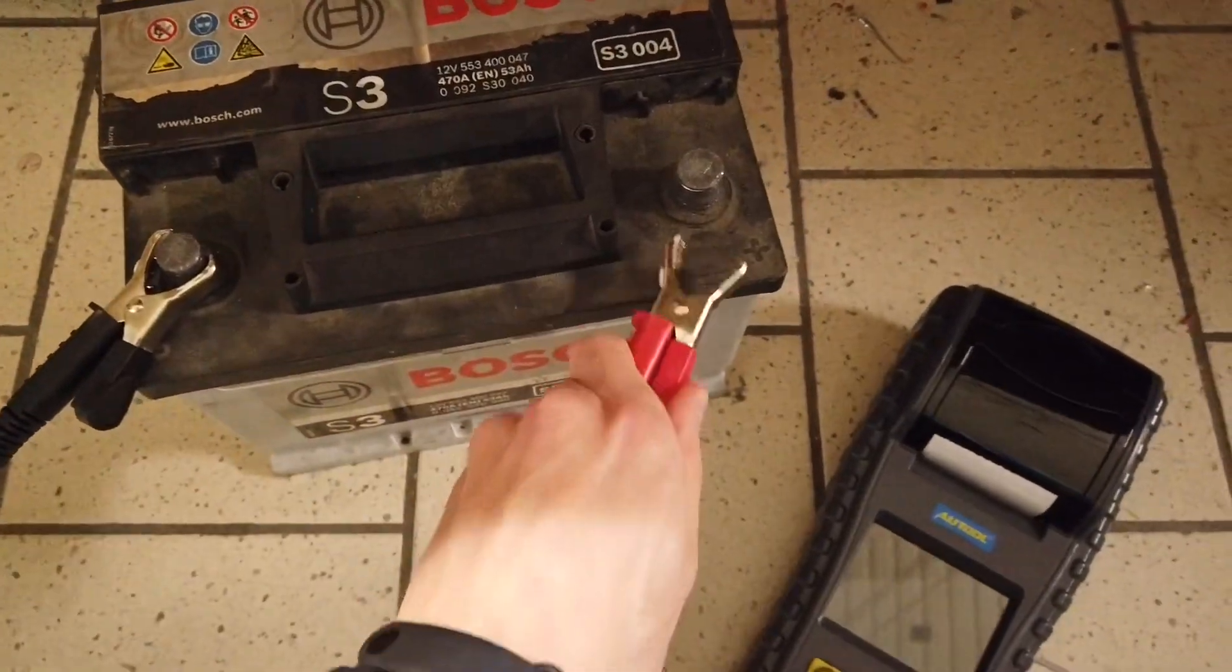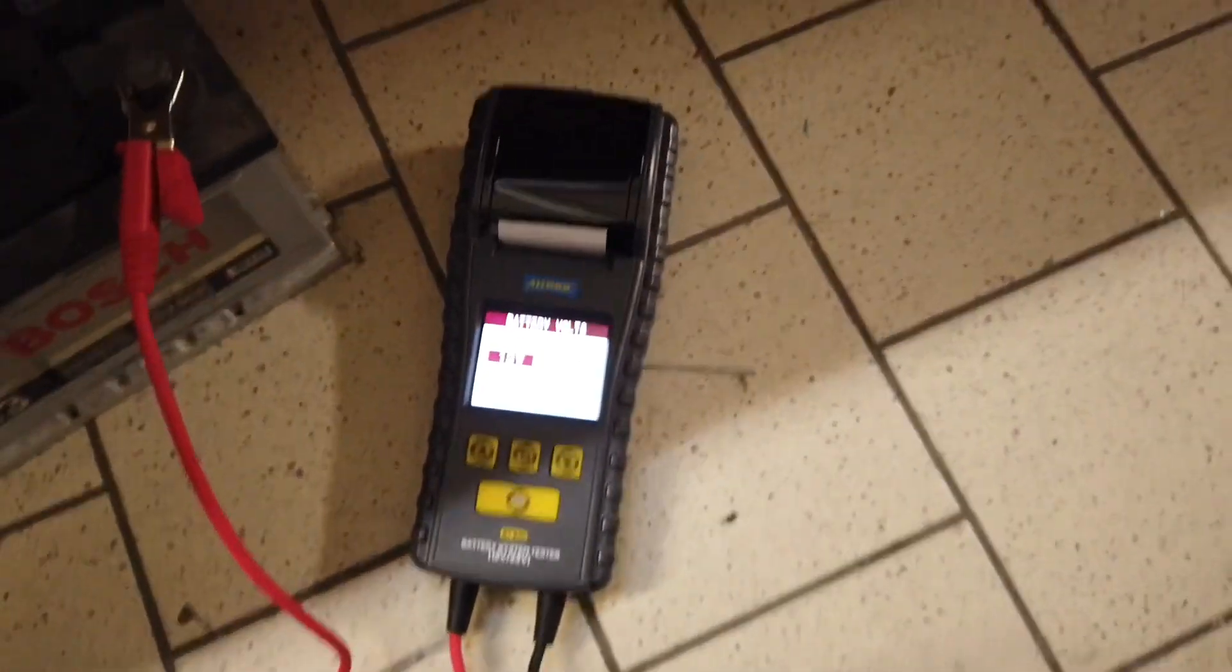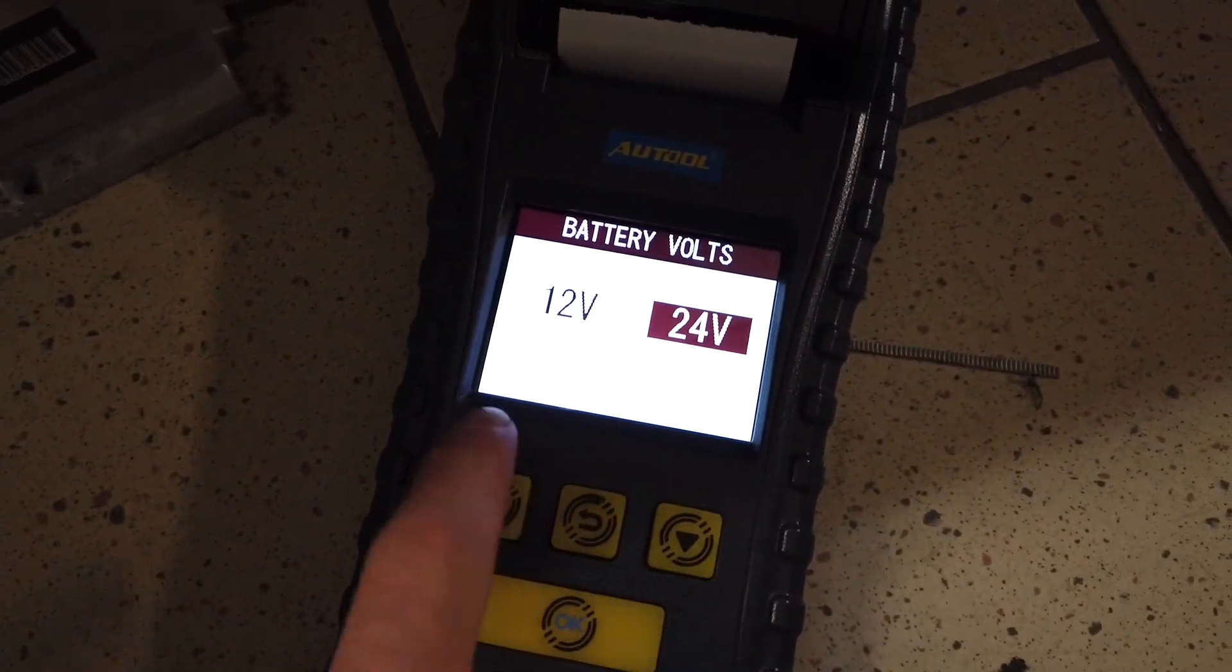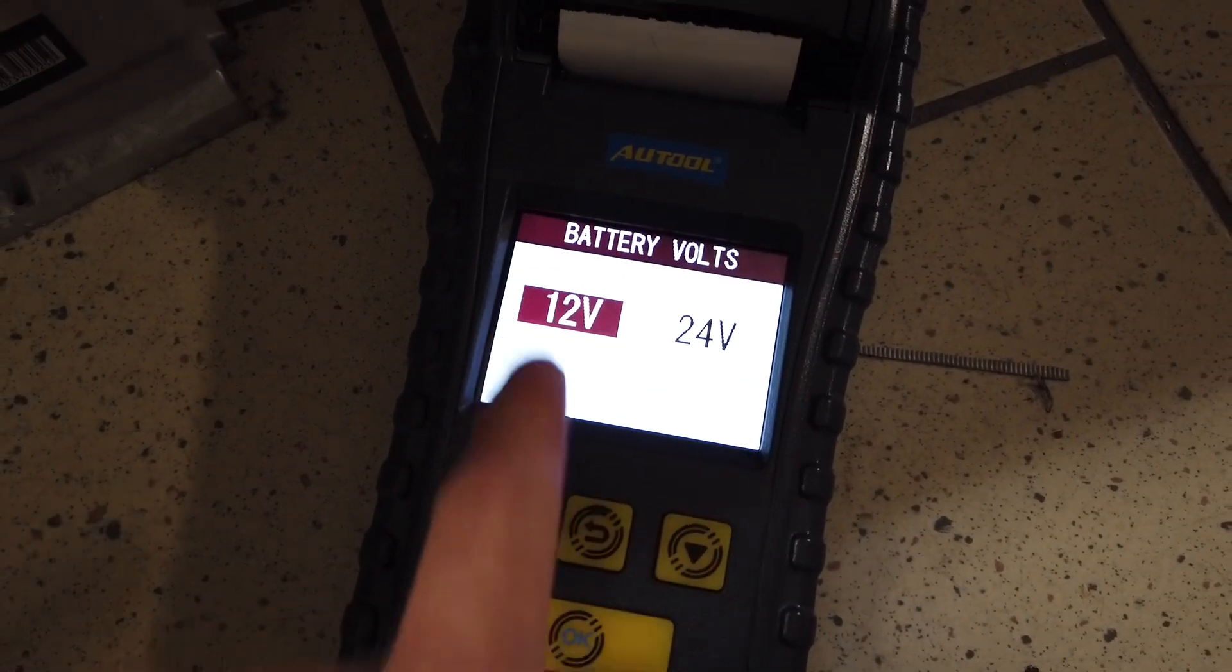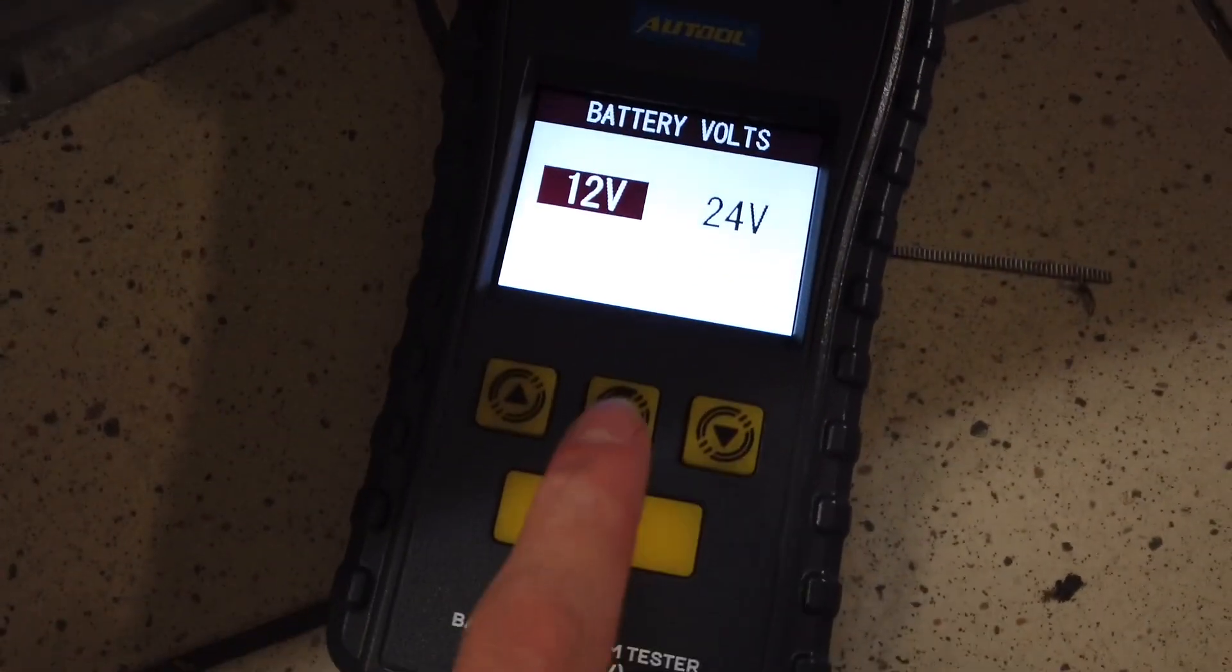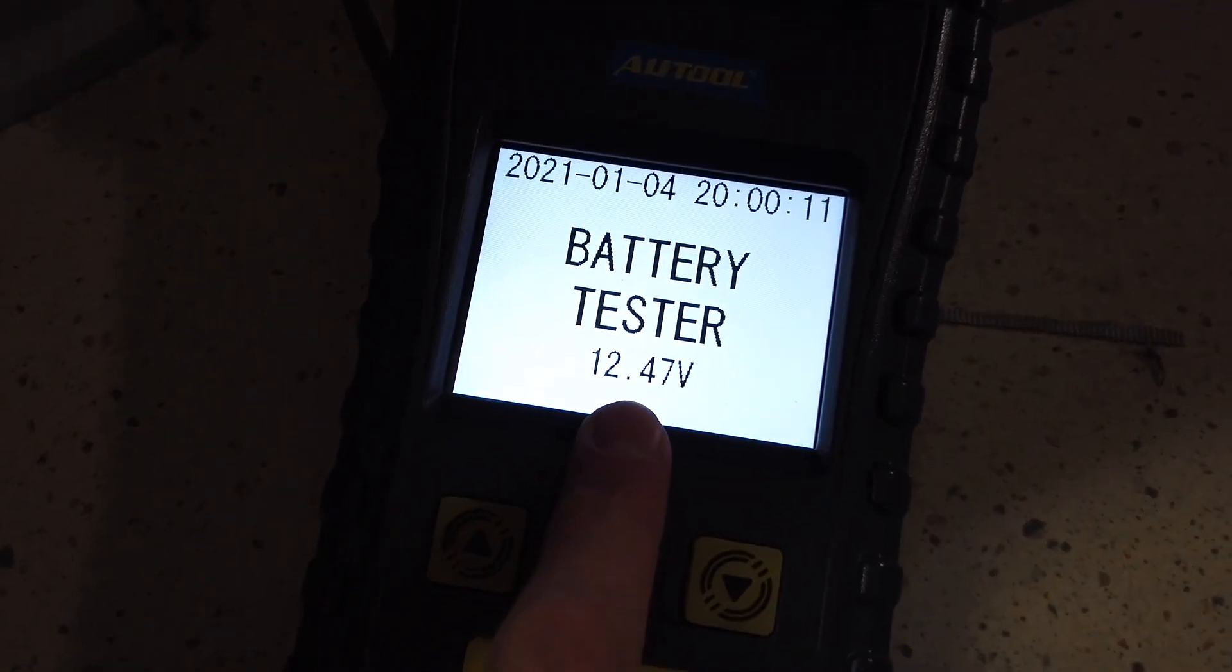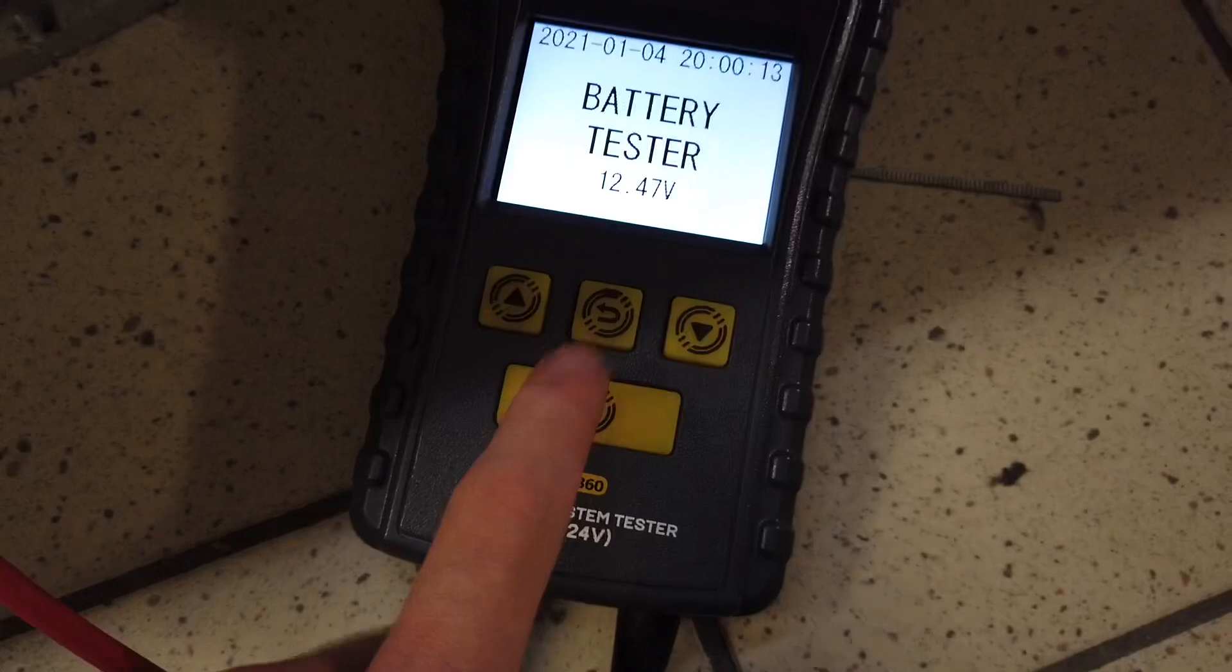Negative here, positive here, and it's already on. You need to select if it's a 12-volt or 24-volt battery. Let's check 12. We have the current voltage over here. Let's press OK.